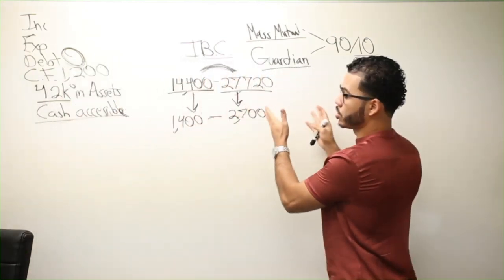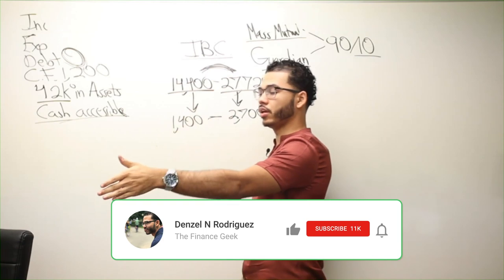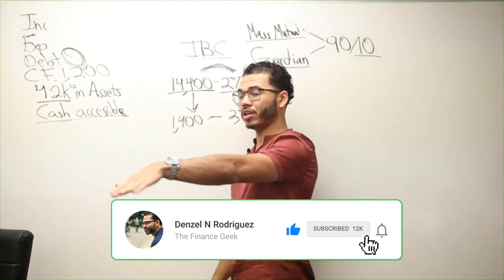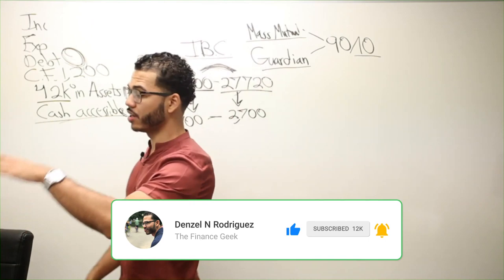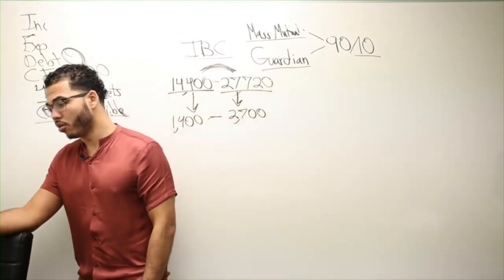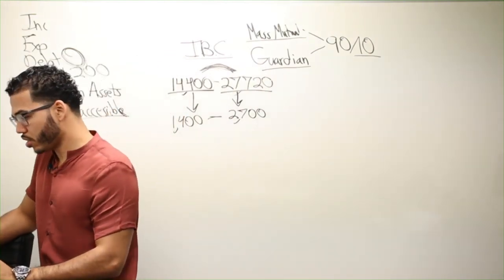If you want to go ahead and start this right away, you can click the link in the description below where it goes over Ready to Start Your Life Insurance Asset. It's going to take you to IBC Global and they'll put you in touch with an agent.